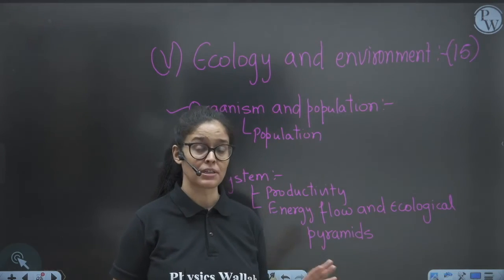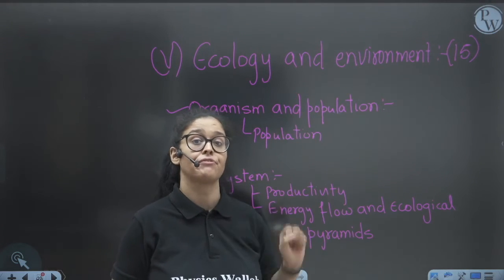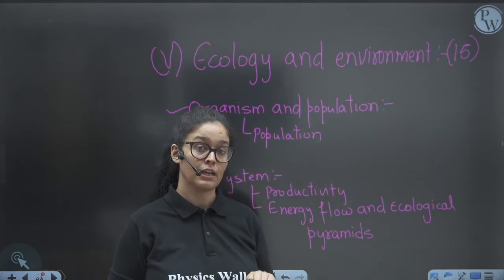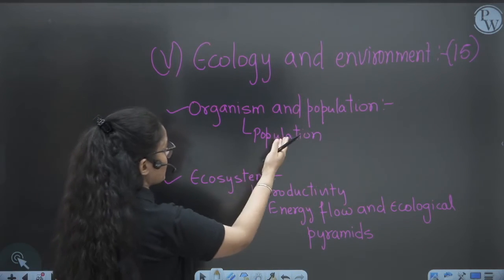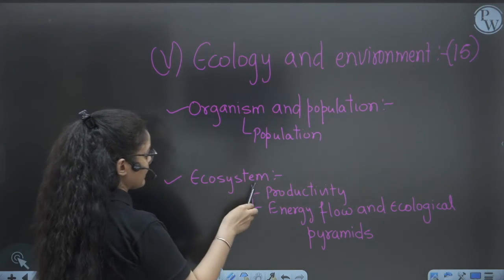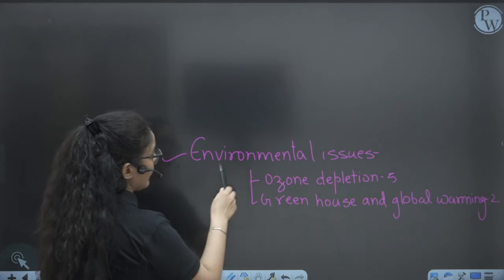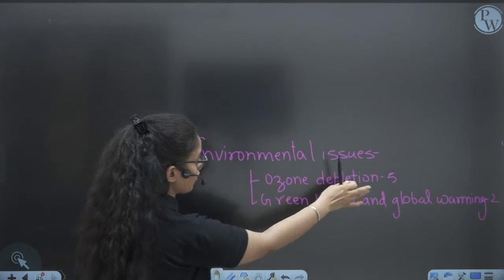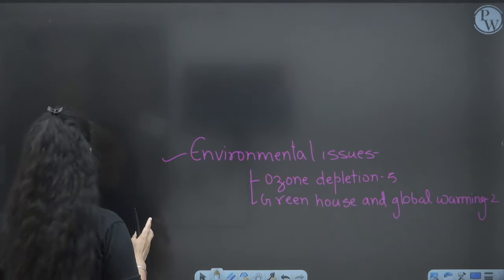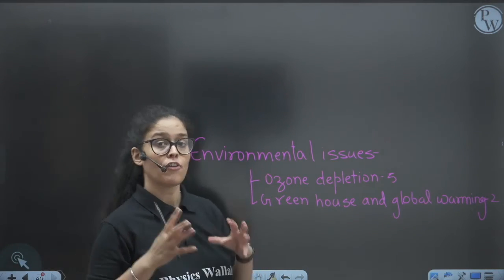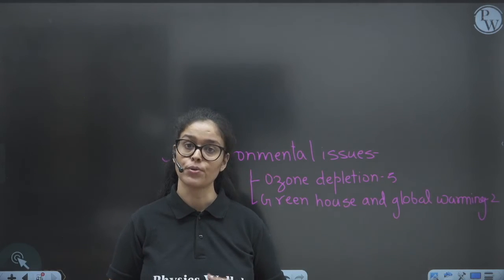Ecology and Environment is one of the easiest units — you get free marks here, with ten to fifteen questions on average. Important topics: Organism and Population; Ecosystem — Productivity, Energy Flow, and Ecological Pyramids. Environmental Issues: Ozone Depletion — five questions on average; Greenhouse Warming — two questions on average.